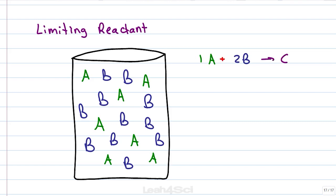I have a beaker here with a random number of A and B and I want to know which is going to run out first, is it A or B? According to the balanced reaction, we have one A for every two B so that means if I use one A and two B, I get one product.